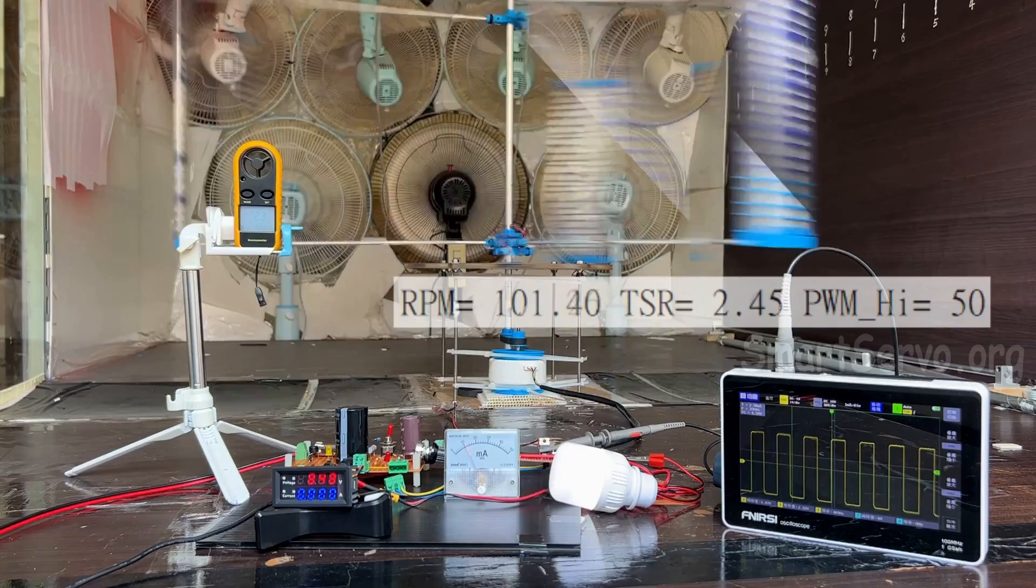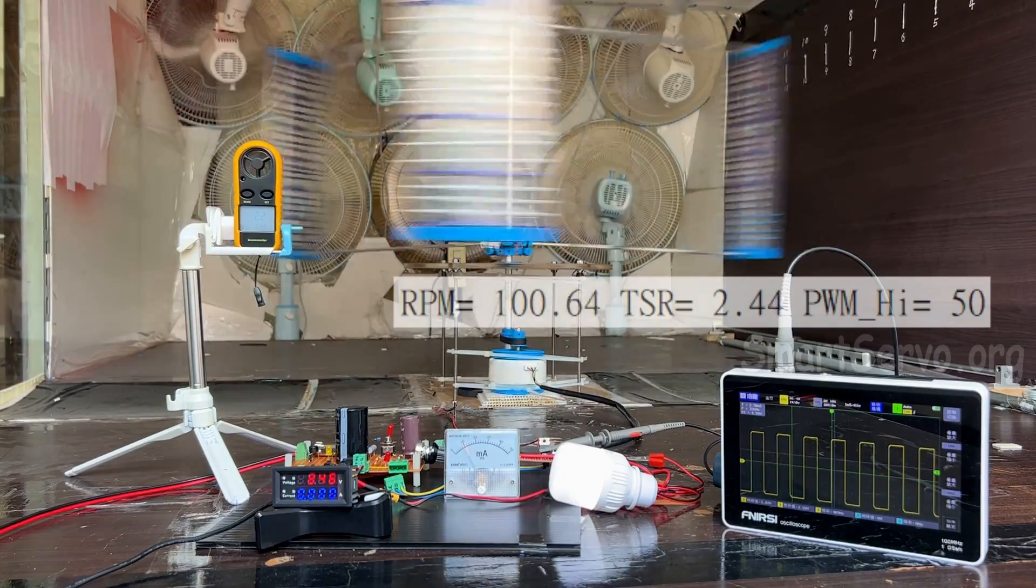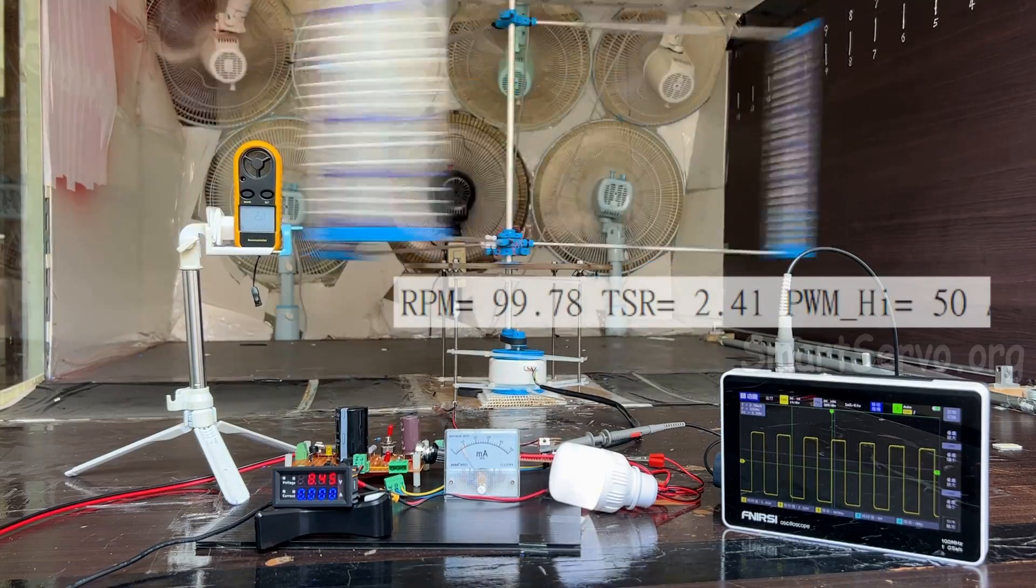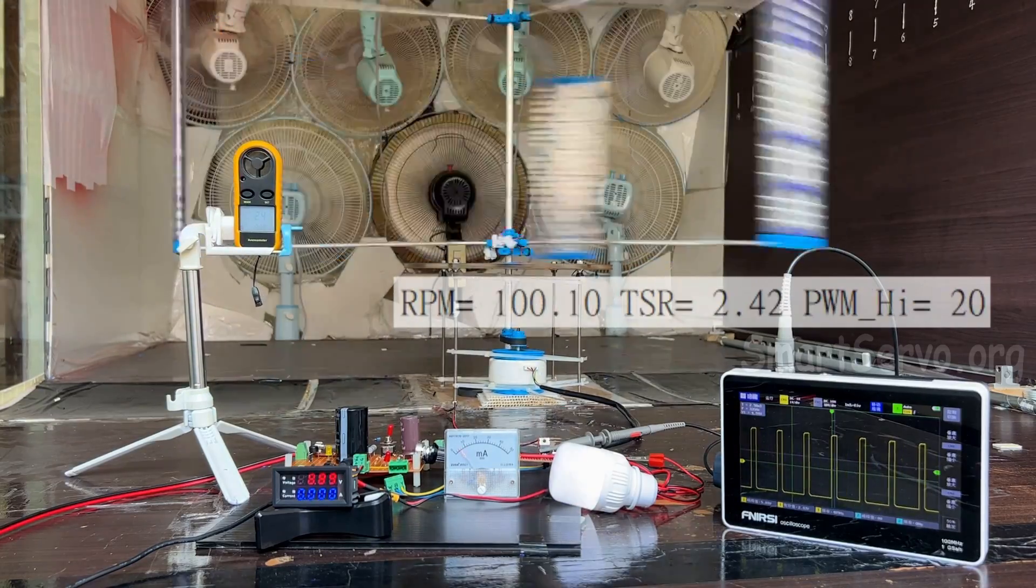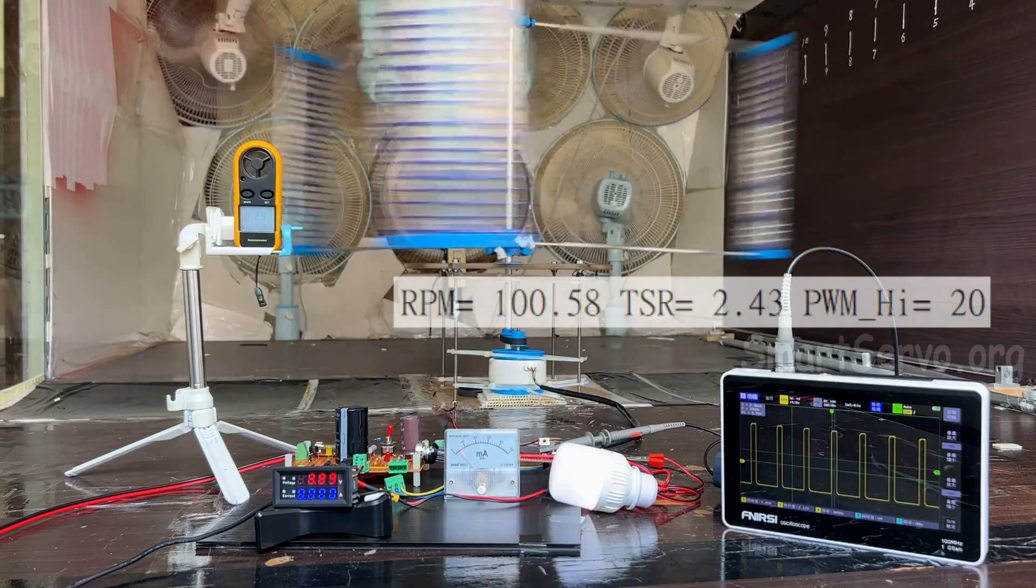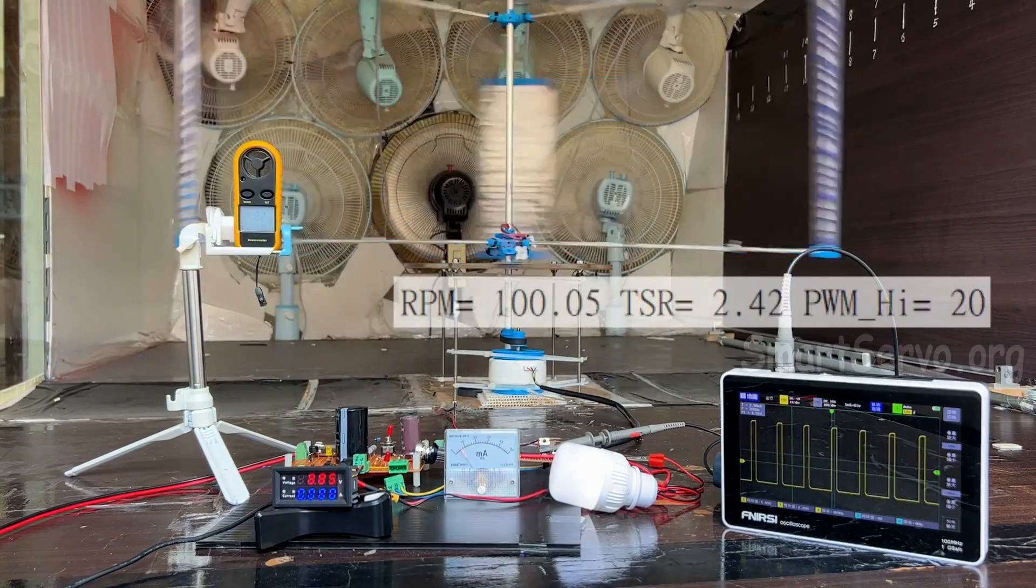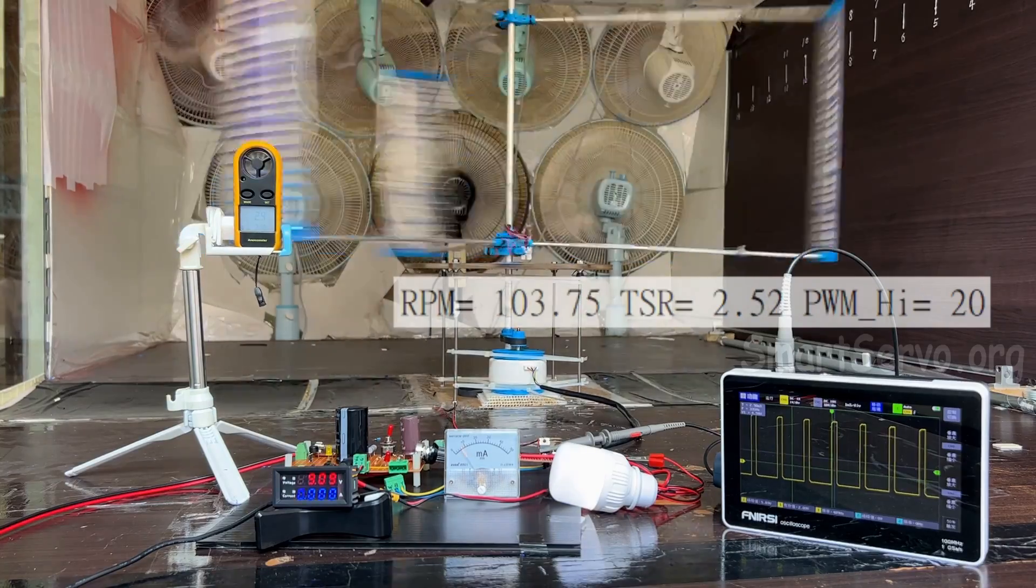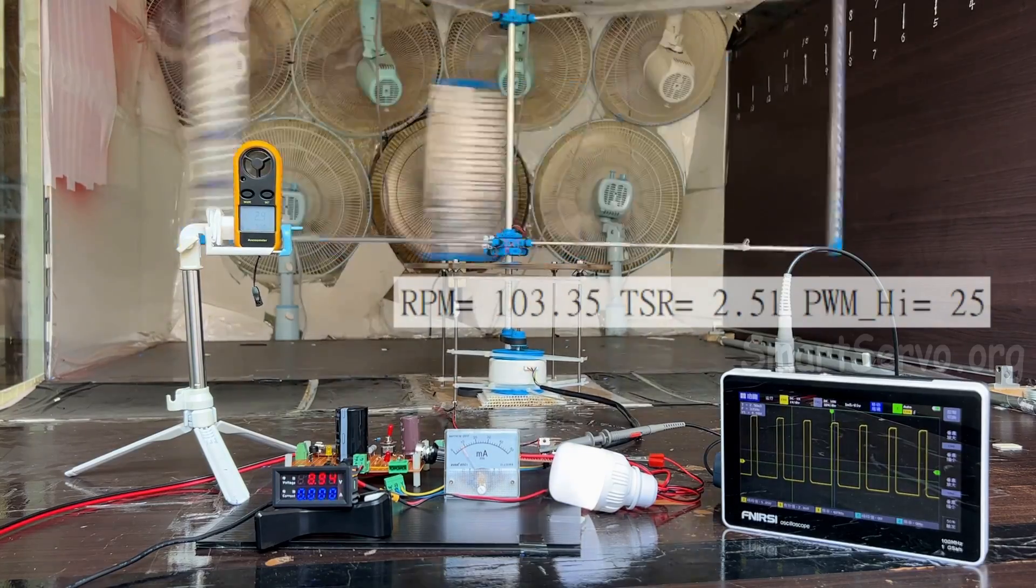The speed continues to decrease below 100 RPM. Set PWM to 20% duty. The speed increased and returned to above 100 RPM. Increase PWM to 25% to maintain speed.